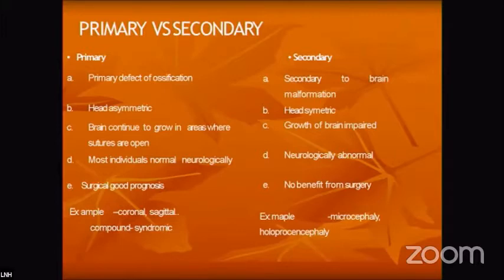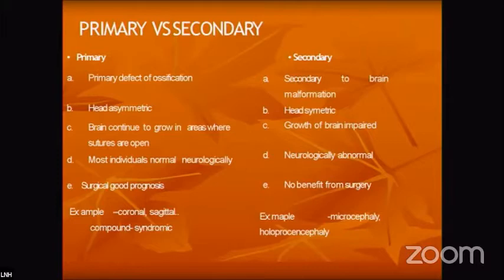Secondary synostosis is due to brain malformations like atrophy. The head will be symmetric, brain growth is impaired, and neurologically the patient is abnormal with low IQ, delayed milestones, and no benefit from surgery. Examples include microcephaly and related conditions.